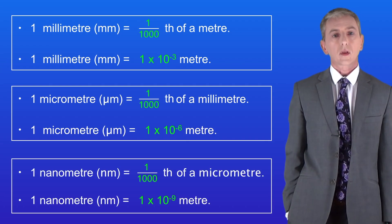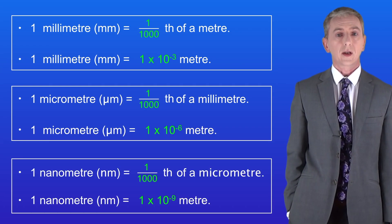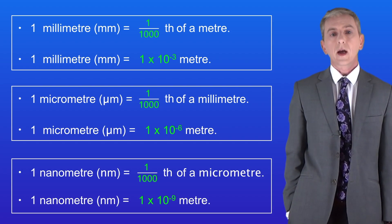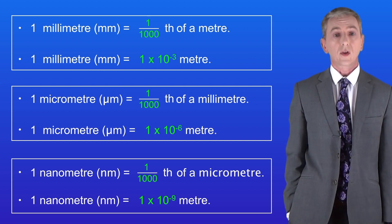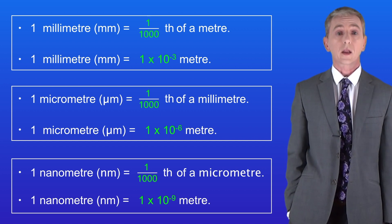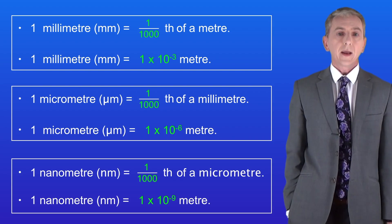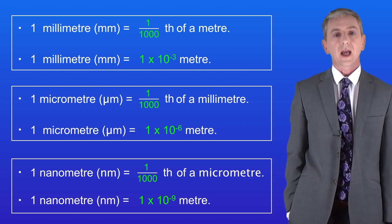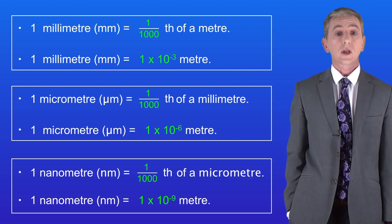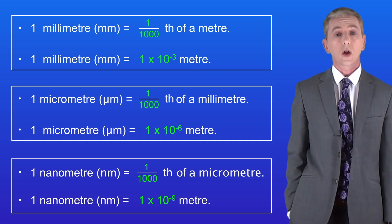If we take one thousandth of a micrometer then we've got a nanometer. In standard form a nanometer is one times ten to the power of minus nine meters. So in other words a nanometer is one billionth of a meter. A nanometer is a very useful size in chemistry. To give you an idea of that we could fit around four atoms of a large element such as uranium into one nanometer.